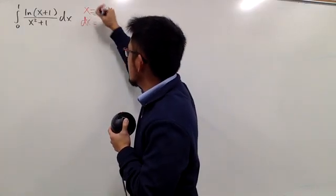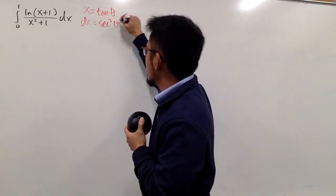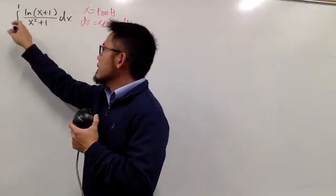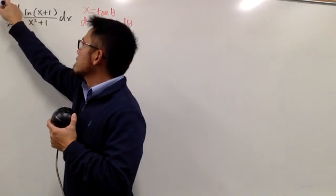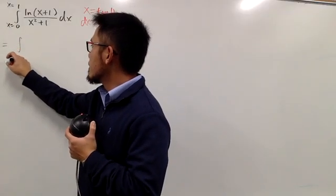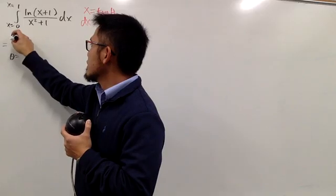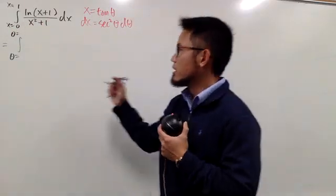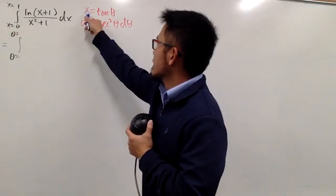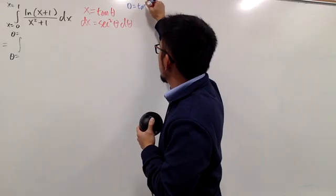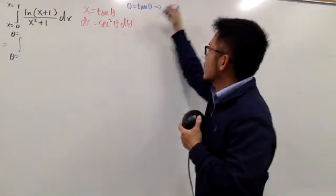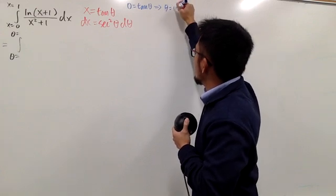Let's differentiate both sides. We'll see that dx equals sec²θ dθ. Now remember, this integral goes from x = 0 to x = 1, and when we bring it into the theta world, we need to find the corresponding theta values for the limits of integration. When x = 0, we have 0 = tan θ, and tangent of what angle gives 0? A nice answer is θ = 0.